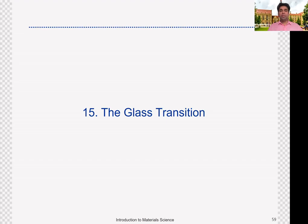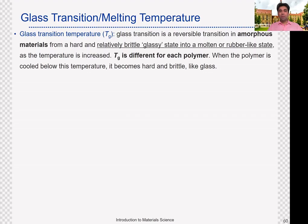Now we are in section number 15: the glass transition temperature of materials. We have discussed before two different types of materials based on their nature — amorphous materials and crystalline materials. Amorphous materials do not have an ordered structure; they have a random structure with no proper arrangement of their microstructure or chains. For crystalline materials, there is an ordered structure where atoms are in fixed positions and cannot move freely. Depending on whether they are crystalline or amorphous, their processing behavior will be different.